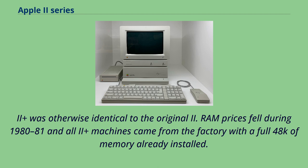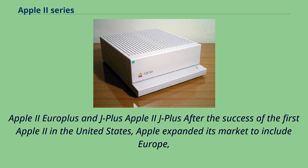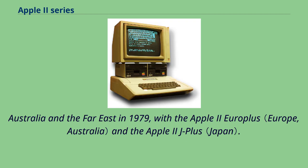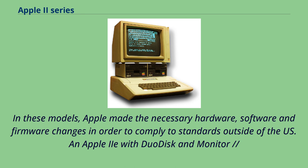After the success of the first Apple II in the United States, Apple expanded its market to include Europe, Australia, and the Far East in 1979, with the Apple II Europlus and the Apple II J-Plus. In these models, Apple made the necessary hardware, software, and firmware changes in order to comply with standards outside of the US.